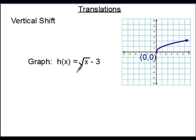Here's another: the square root of x minus 3. This tells you that you're beginning with the square root function. Simply take the square root function and move it down three units. Therefore, that's what your graph looks like.